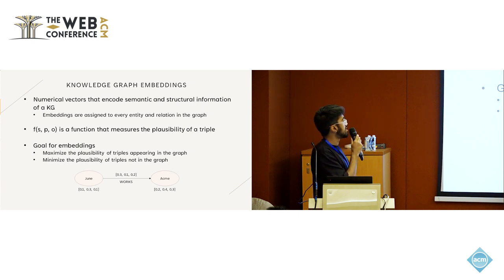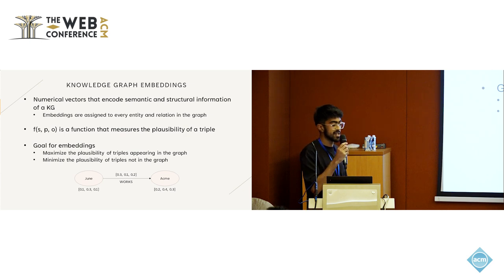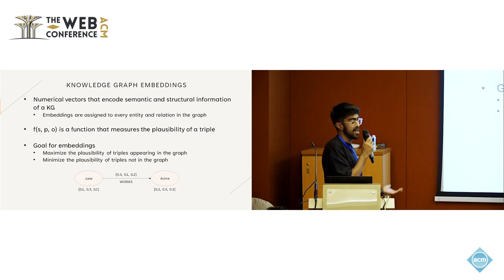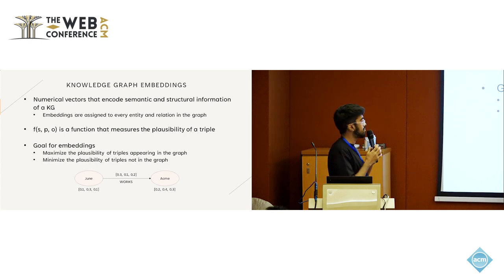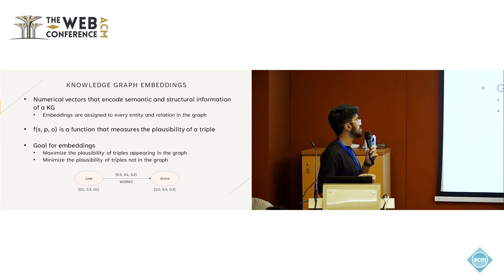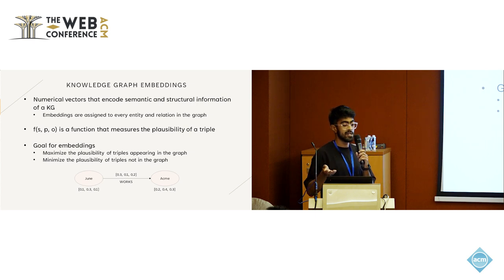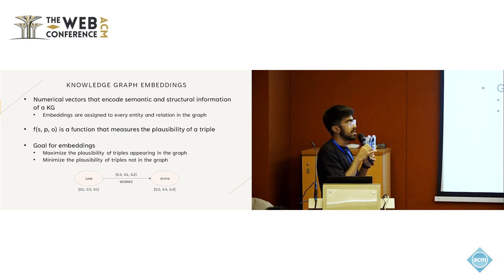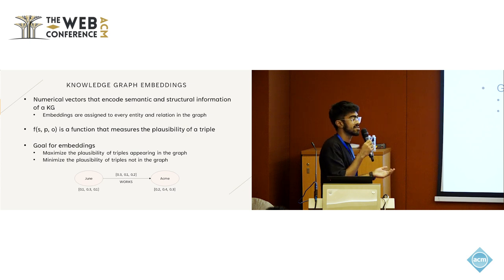These embeddings are used in the form of a scoring function, where the scoring function takes in the embeddings of the subject, the predicate, and the object of a triple, and outputs a single value score measuring the plausibility of the triple. The goal when creating embeddings is to maximize the plausibility of positive triples appearing in the graph, and minimize the plausibility of negative triples that do not appear. In practice, embeddings are much larger than the three-dimensional example shown, as they capture a lot of information.